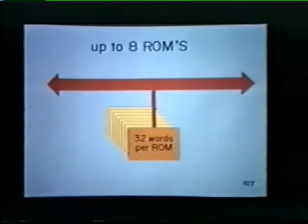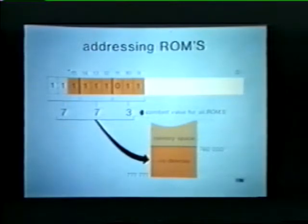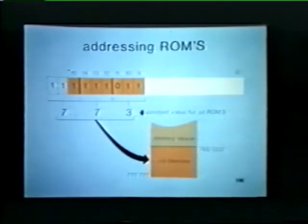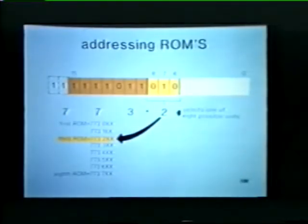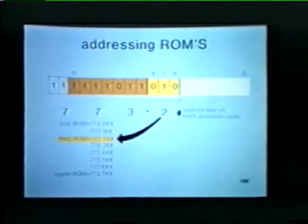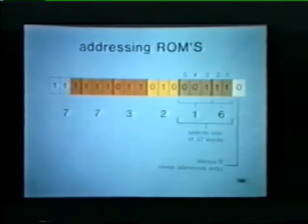Let's see how we address data words stored in these read-only memories. Bits 9 through 15 of the ROM address are always equal to 773. As we saw earlier, addresses below 760000 are part of our addressable memory space — the remaining addresses are reserved for I/O devices; hence the ROM address falls within the space reserved for I/O devices. Address bits 6, 7, and 8 are always used to select one of the eight possible ROM units. In this example we have selected the third ROM in the PDP-11 system, and each ROM is pre-wired to recognize a unique combination of address bits 6, 7, and 8.